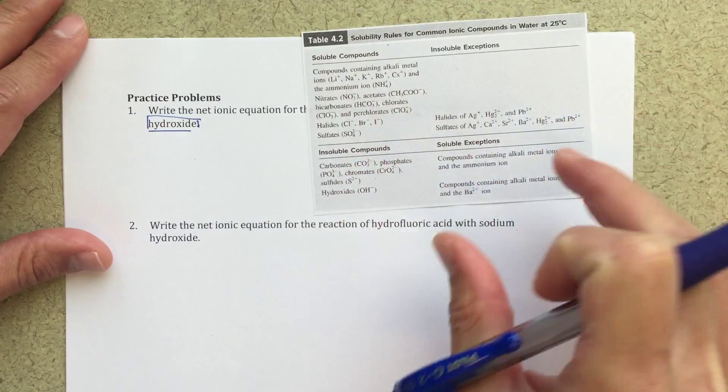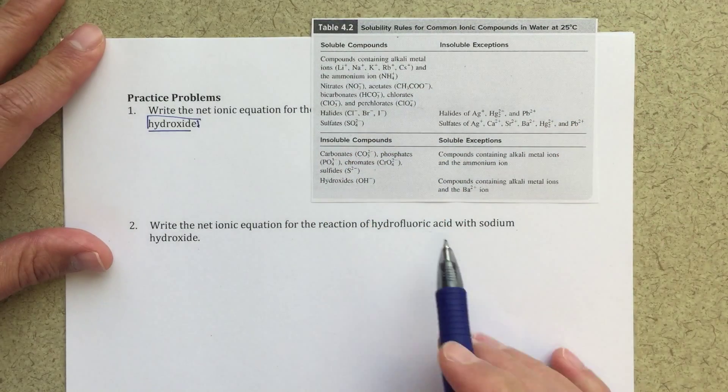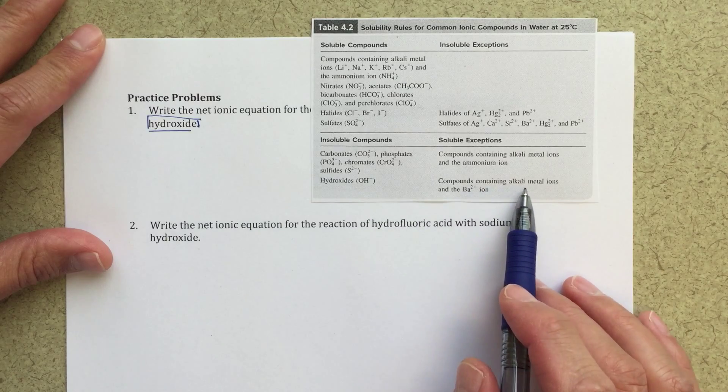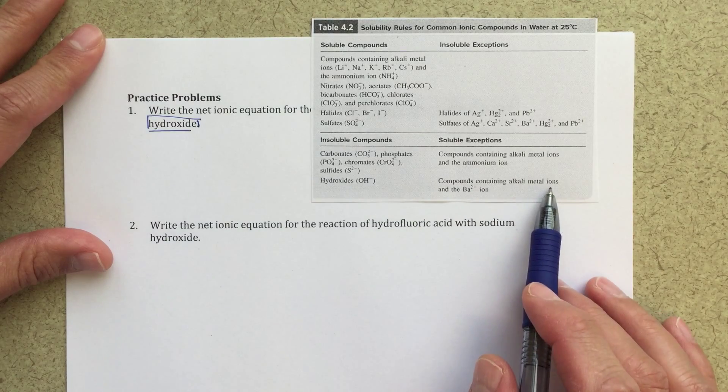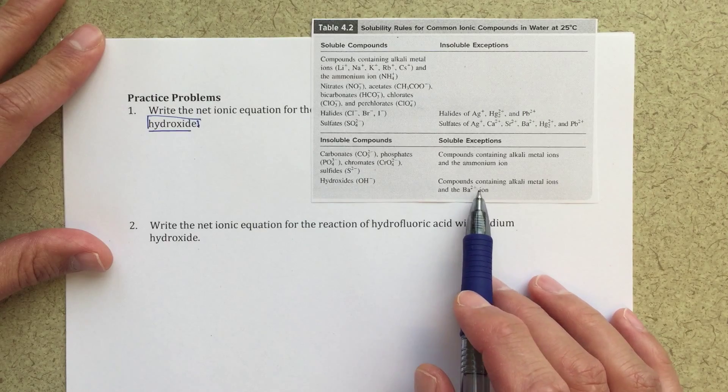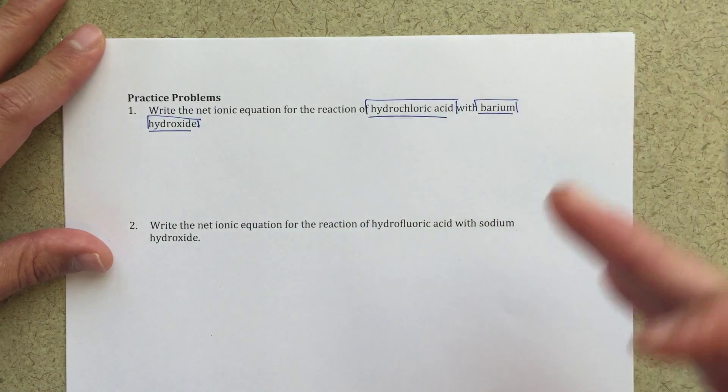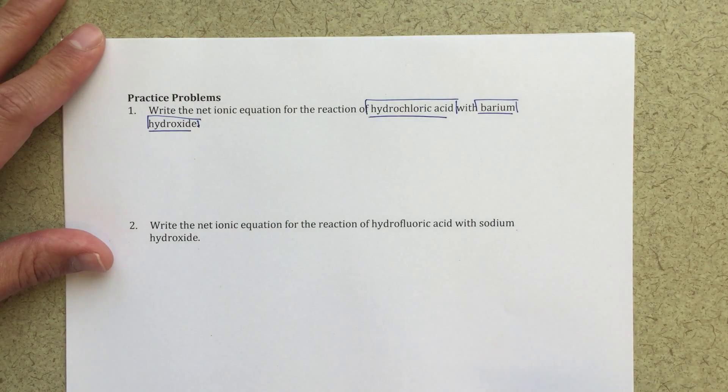If we go to our solubility rules, I can see that hydroxides are typically insoluble, but compounds containing alkaline metal ions and the barium two plus ion are going to be soluble. That tells us that barium hydroxide will completely dissociate, it will be a strong base.